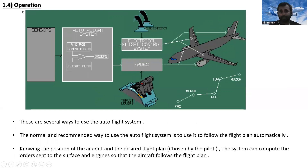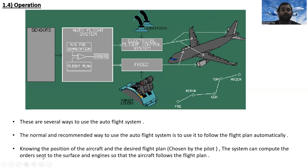Next is operation. There are several ways to use the auto flight system. The normal and recommended way is to use it to follow the flight plan automatically. Knowing the position of the aircraft and the desired flight plan chosen by the pilot, the system can compute orders sent to the surfaces and engines so that the aircraft follows the flight plan. The data flows from aircraft position computation and flight plan through a gate to generate orders, which are then sent to the electrical flight control system and FADEC.